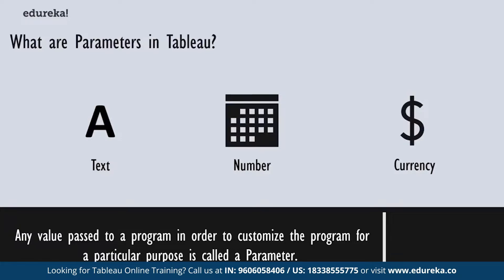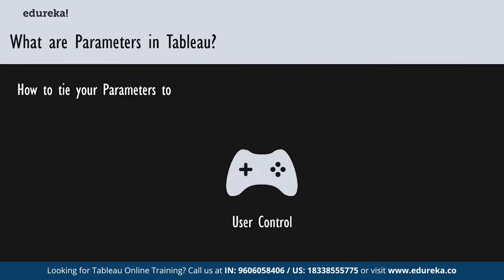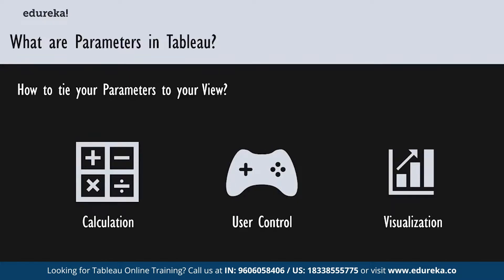Any value that is passed to your program in order to customize it for a specific purpose is called a parameter. It could be anything — a string of text, a range of values, or any amount in rupees or dollars. Parameters help you experiment with what-if scenarios: suppose you are unsure which fields to include or which layout would work best, you can incorporate parameters into your views, charts, graphs, and calculations to let viewers choose how they want to look at your data. When you use parameters, it is important to tie them to the view in some way — one way to do this is via calculations.